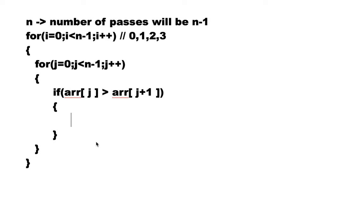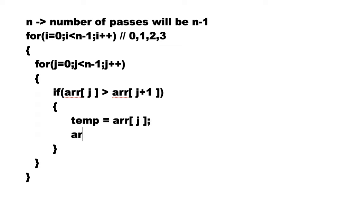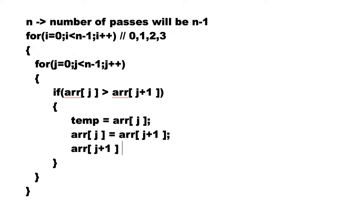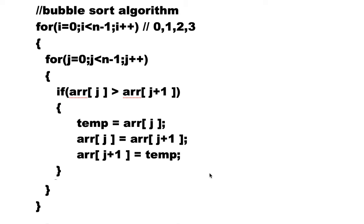Within the if block, we are going to write the common code to swap the values of two variables. So it will be: temp equals to ARR[j] — that means we are assigning the value of ARR[j] to a temporary variable. In the next line, ARR[j] gets the value of ARR[j+1]. And in the final line of code, we assign ARR[j+1] the value stored in the temp variable. And that's it. This is the bubble sort algorithm that is going to sort your array.